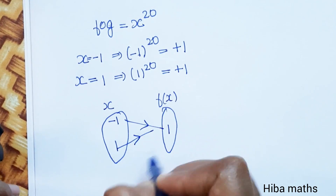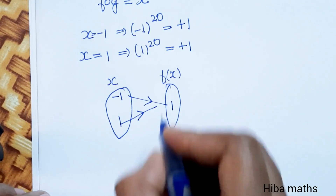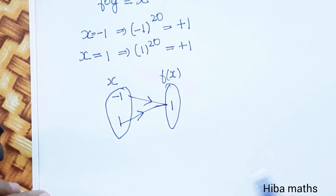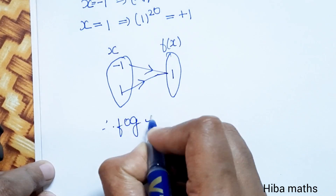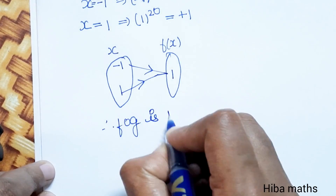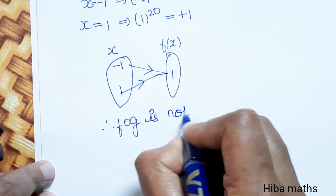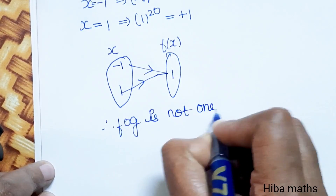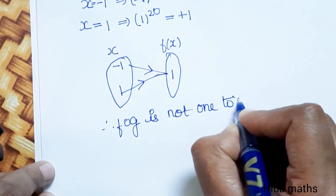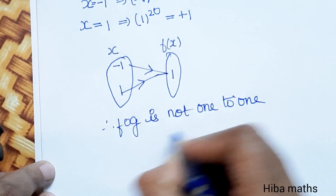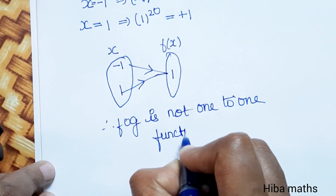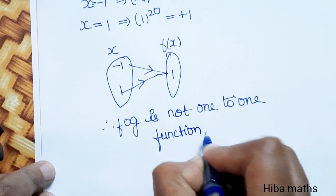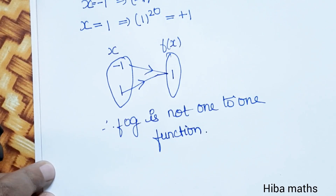So either many-to-one or one-to-one — in this case, f∘g is not a one-to-one function. I hope everyone understands. Thank you so much for watching.